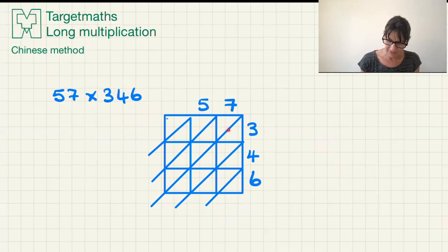57 times 346. Now we're going to multiply in. Into this box is seven times three, which is 21. Into this box is seven times four, which is 28. Into this box is seven times six, which is 42. Into here we've got five times three, which is 15. Five times four, which is 20. And then the last one here is five times six, which is 30.